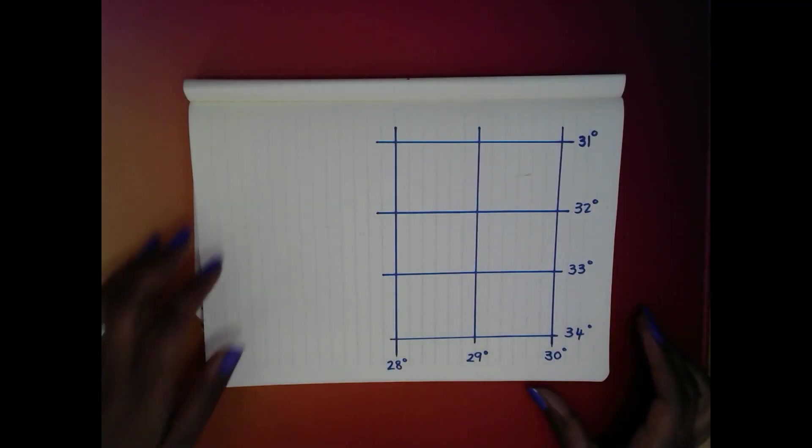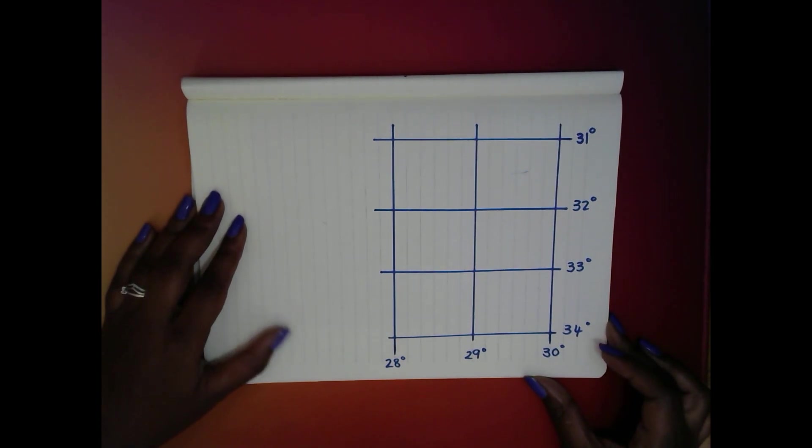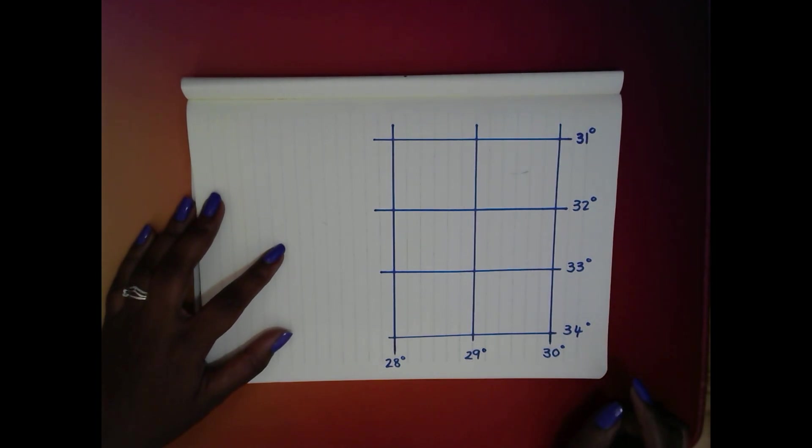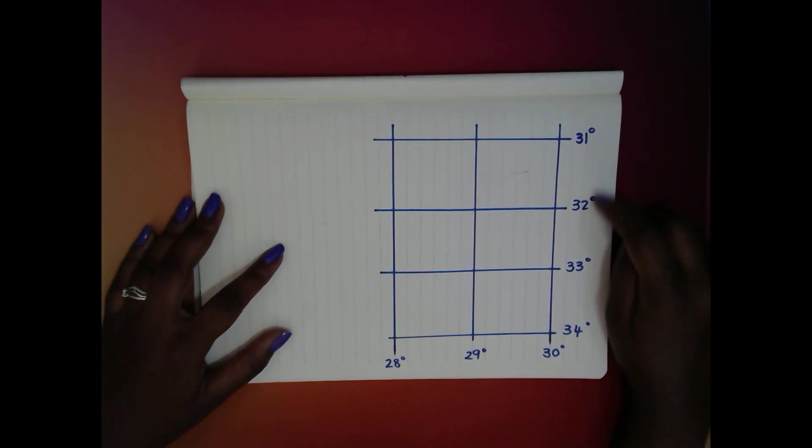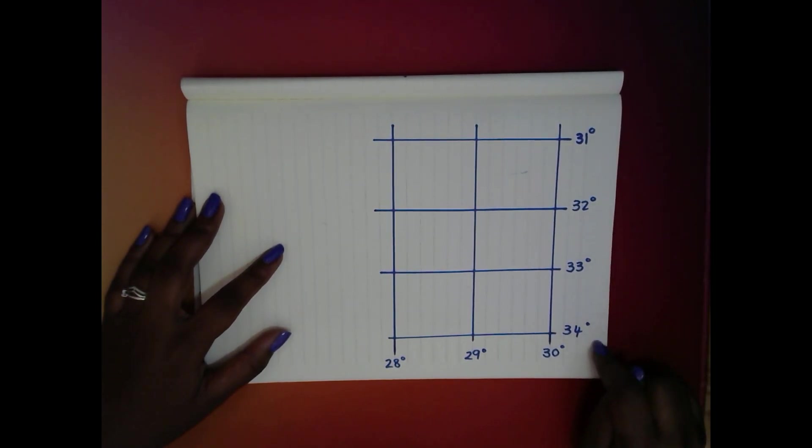Great, so as you can see, another grid to work with today. Except the difference between this grid and the last one is that the last one was going up in fives and this one is going up in ones. So we got 31, 32, 33, 34 and 28, 29, 30.